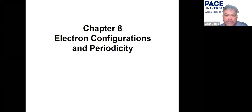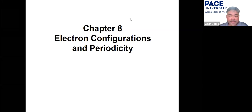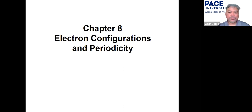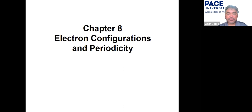Chapter eight is about electronic configurations and periodicity. We're going to talk about the fourth quantum number, how electron configurations relate to it, and then move to the periodic table.